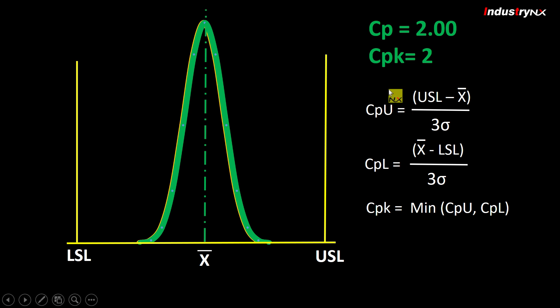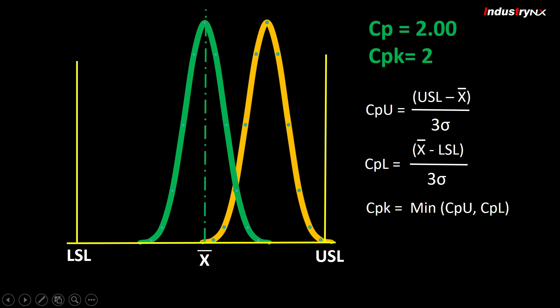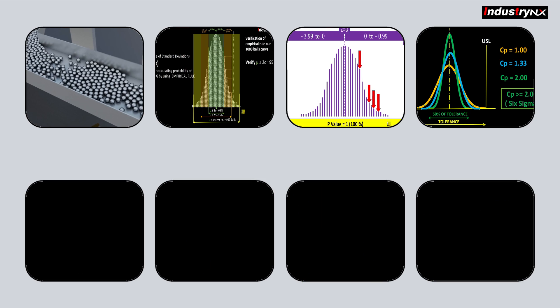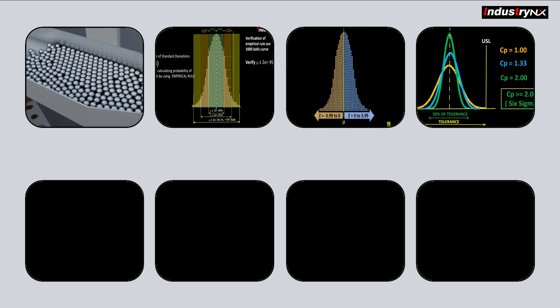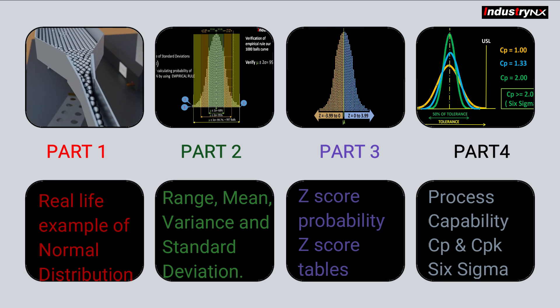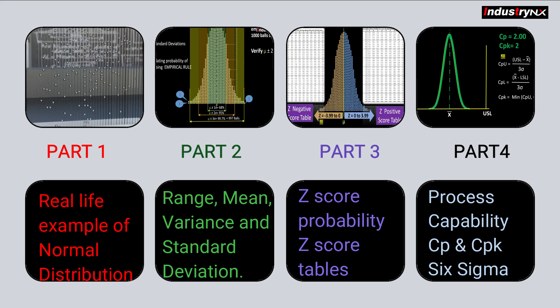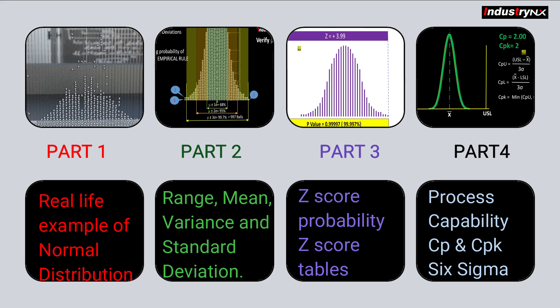Let us understand percentage of rejection through animation if process is shifted from center and how it gives impact on the CPK value. Watch it carefully and give your comments in the comment section in case you need more details. In order to learn more on Industry 4.0 or data science, do not forget to subscribe to this channel and press the bell icon to get more interesting stuff with simplified methods and practical version.